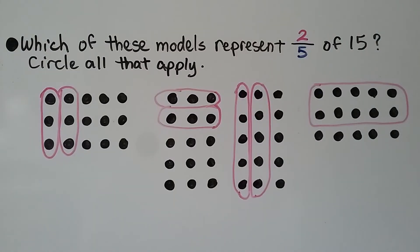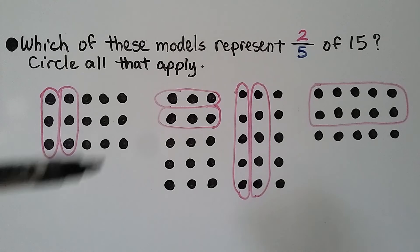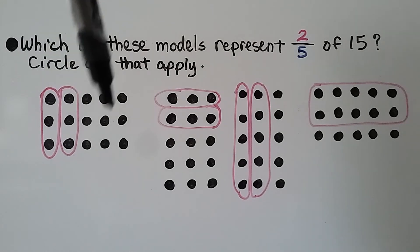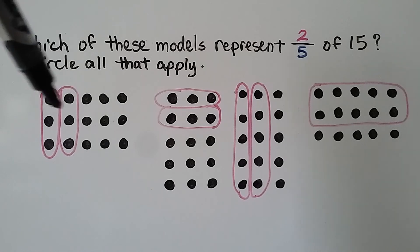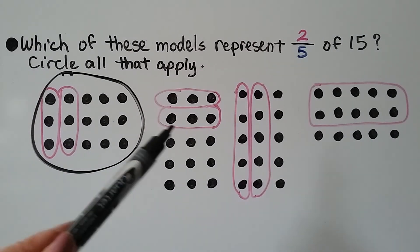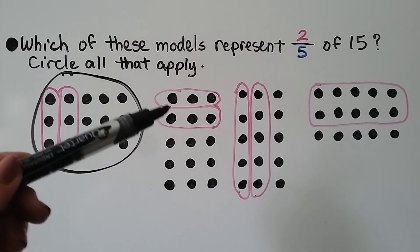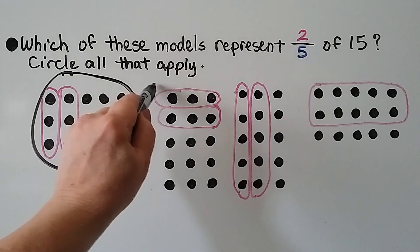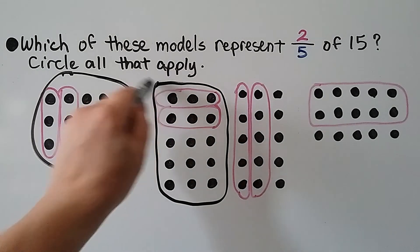Which of these models represent two-fifths of fifteen? We need to circle all that apply. The first model has fifteen counters. If we split them into columns there are five columns, and two of them are circled — two of the five columns. So yes, this would be two-fifths of fifteen. The second model has five rows with two of the rows circled and fifteen in all. If you said yes, you're right — it's two of the five rows representing two-fifths.